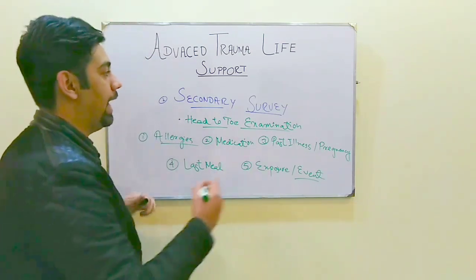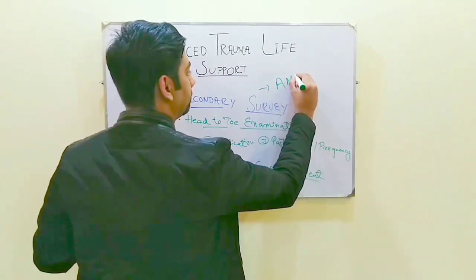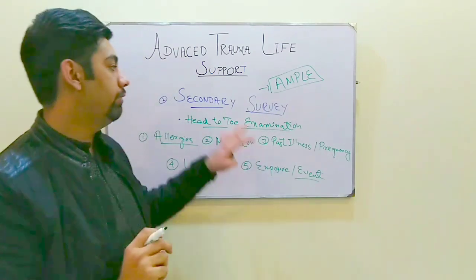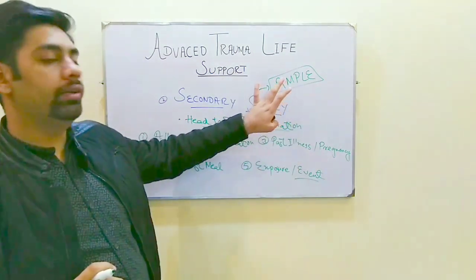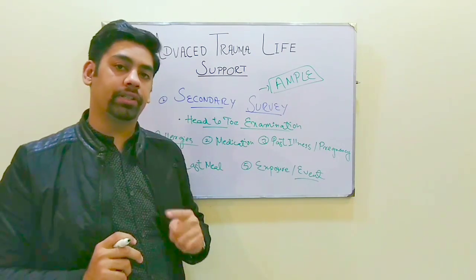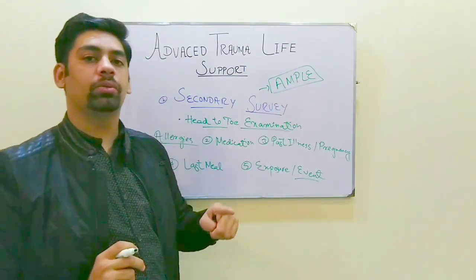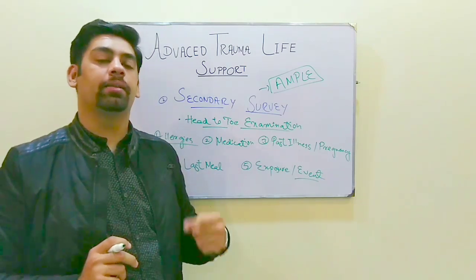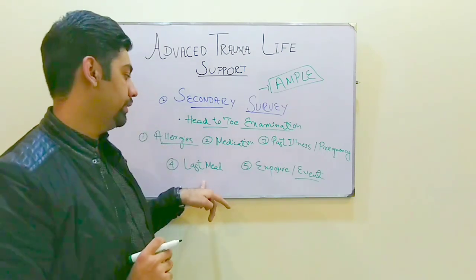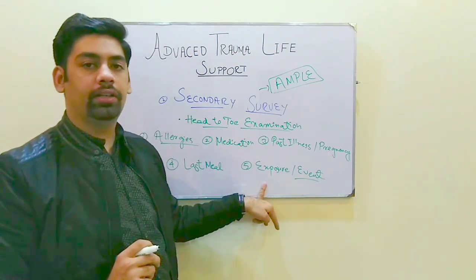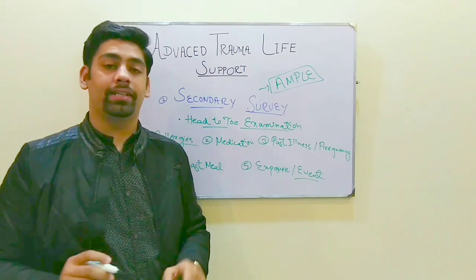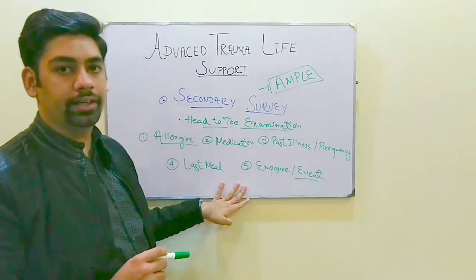The mnemonic for the secondary survey is AMPLE. The mnemonic for the primary survey was A, B, C, D, E, and for the secondary survey it is AMPLE. For A, we look for any allergies. M stands for medication the patient is taking. P is for past illness or whether the patient is pregnant. L is for the last meal. And E stands for the environment, exposure, or mechanism of injury.